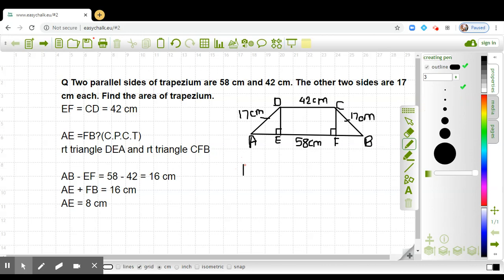So I can say here that DE will be equal to the square root of 17 squared minus AE squared, that is 8 squared.